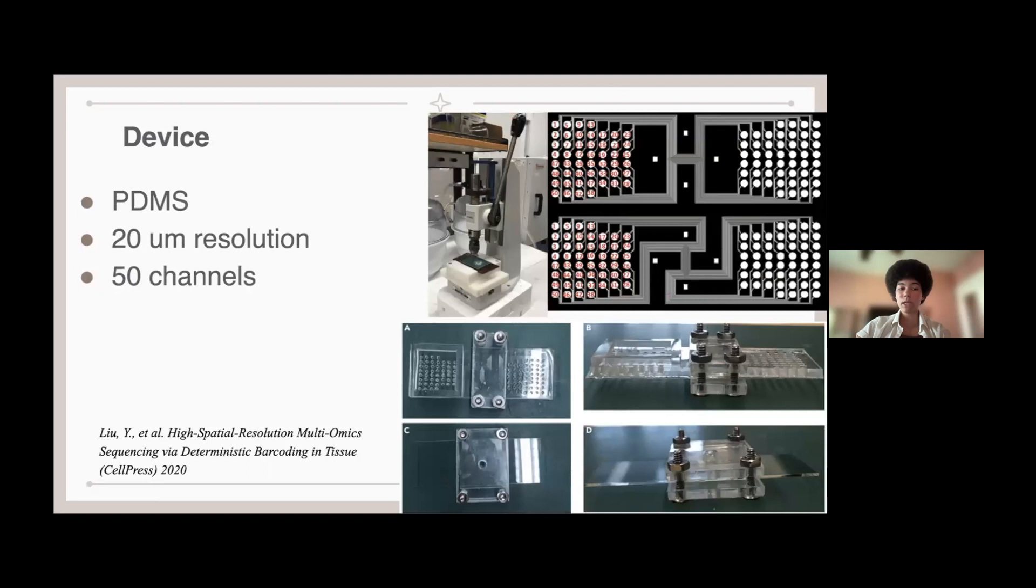We use the device in the upper left corner of the images to punch wells into the PDMS and create the inlets. It was a 20 micrometer resolution, and then we can set up the reservoir so that the tissue is in the middle of the PDMS, and the barcodes can cross the tissue evenly.